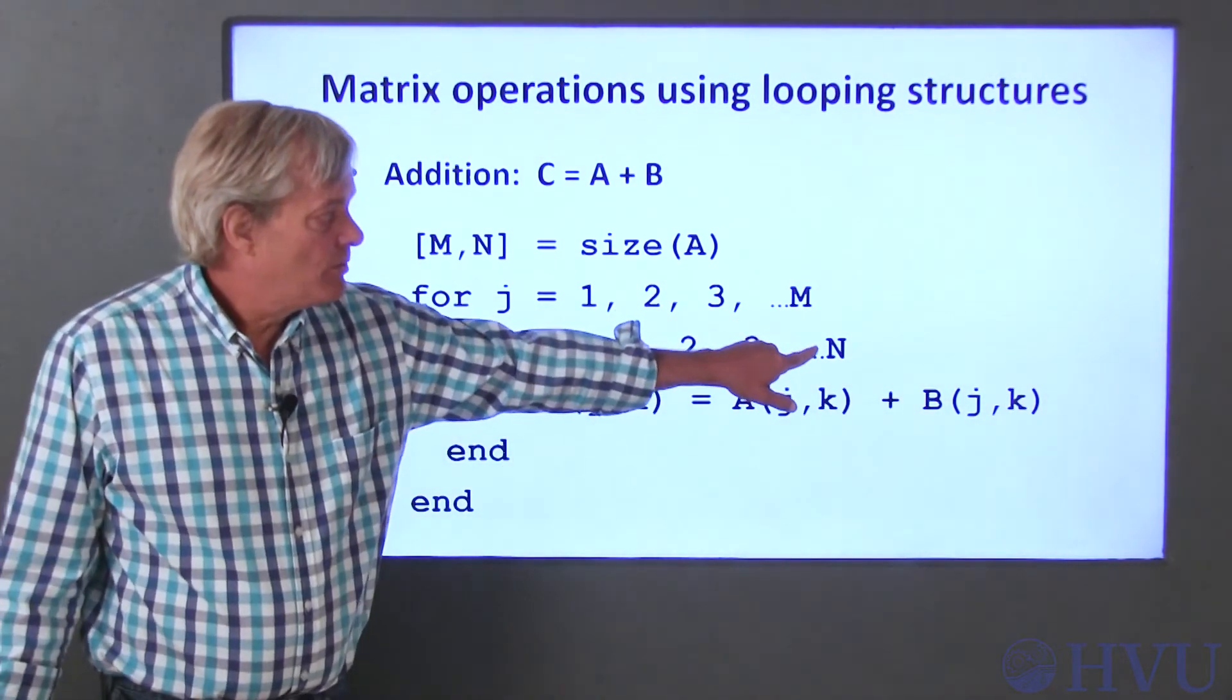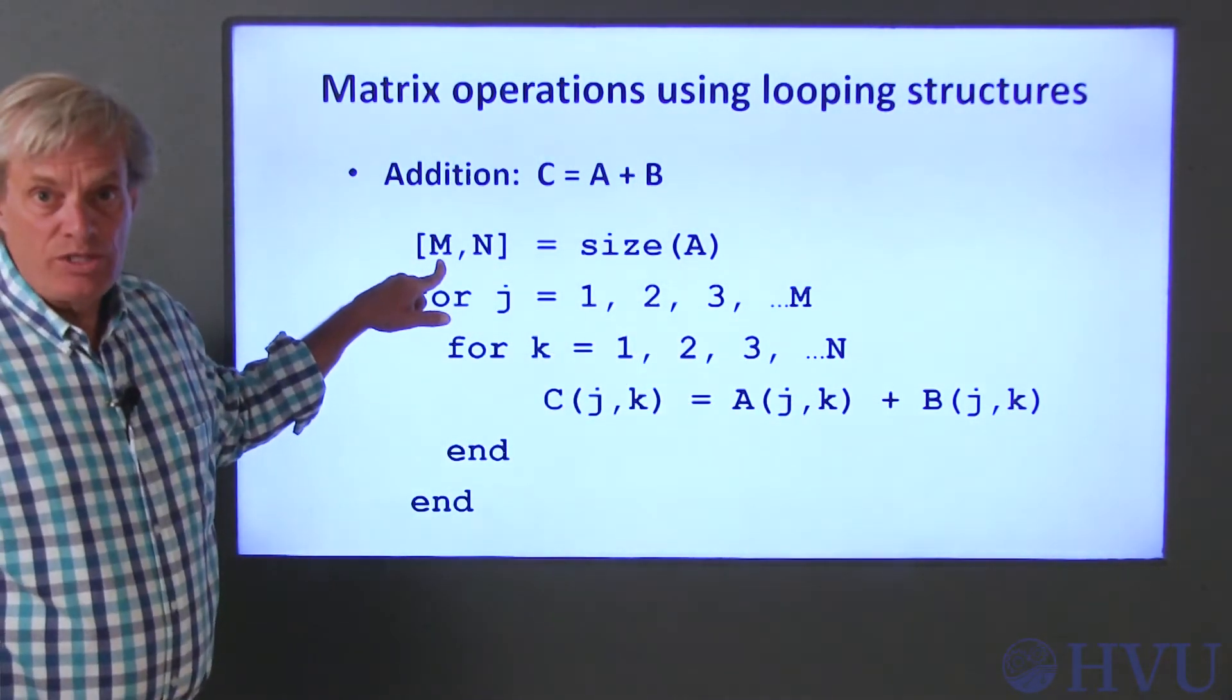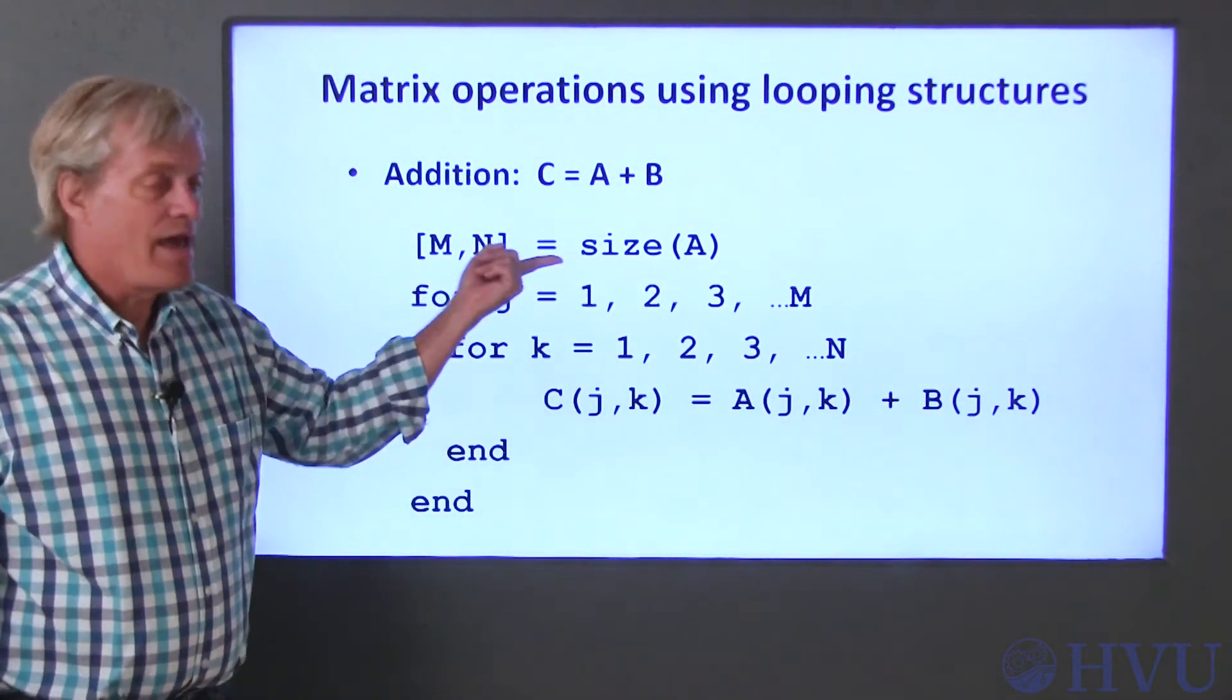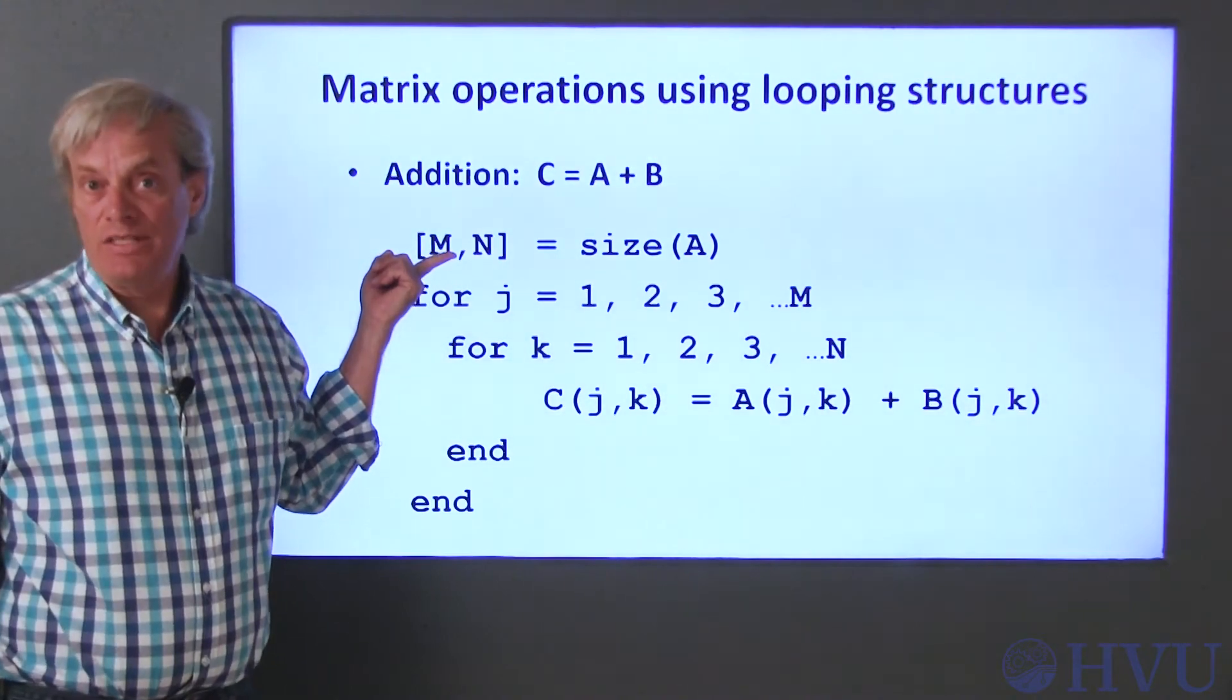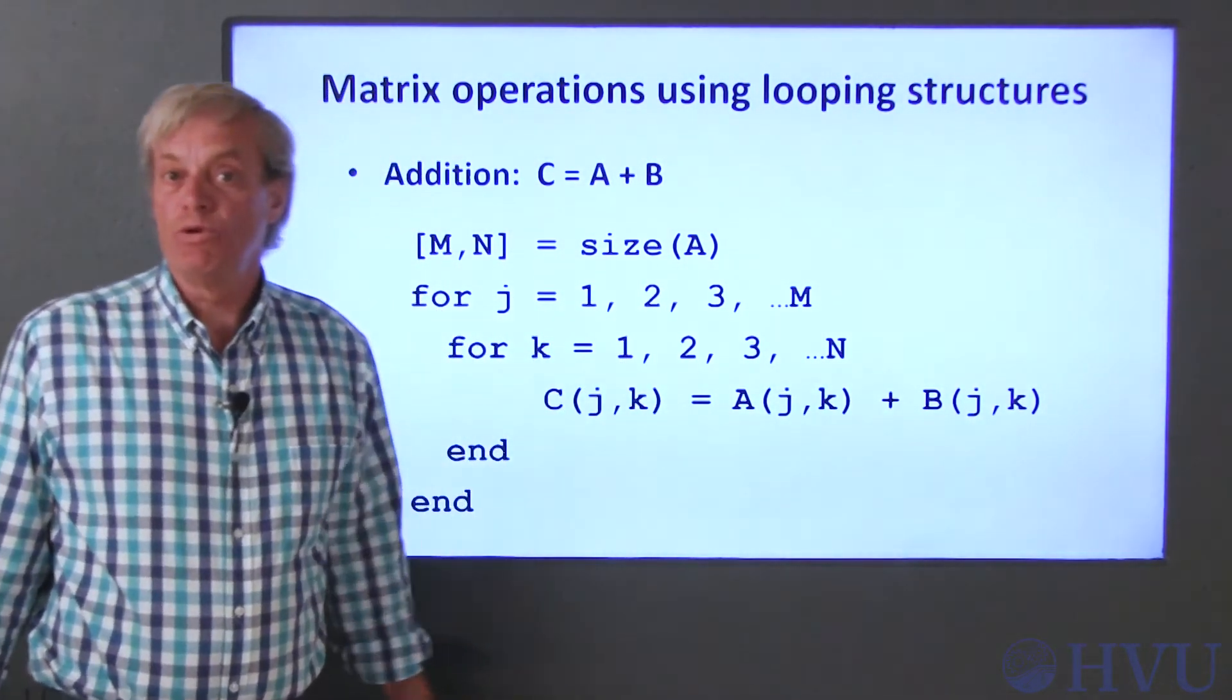Finally, we need to determine what M and N are. M is the number of rows in the matrix and N is the number of columns. So we can use the size command to determine the number of elements in these dimensions. I've used the A matrix to decide the number of rows and columns.